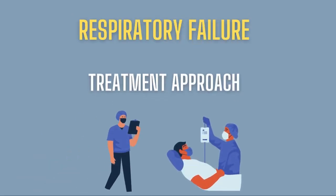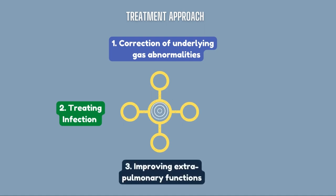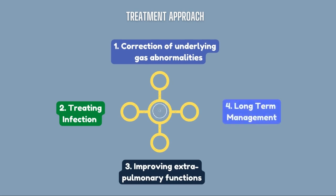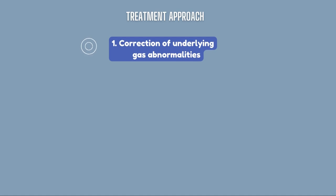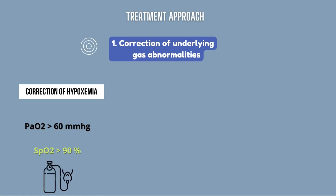There are basically four goals of treatment in patients with respiratory failure: first, correction of underlying gas abnormalities; second, treating infection and secondary causes; third, improving extrapulmonary functions to improve respiration; and lastly, management of long-term complications. Correction of hypoxia aims to maintain sufficient tissue oxygenation, typically achieved with an arterial oxygen tension of 60 mmHg or an SpO2 of roughly 90%. Oxygen toxicity and CO2 narcosis can occur if oxygen supplementation is not regulated, so the inspired oxygen concentration should be set to the lowest level necessary for tissue oxygenation.